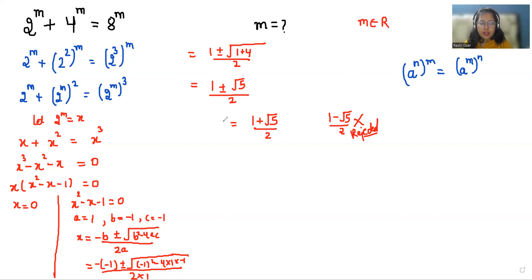This is the value of x, and as we know we made a substitution in place of x, that is 2^m. So we substitute 2^m = (1 + √5)/2.